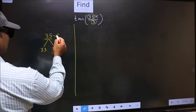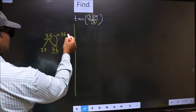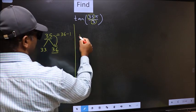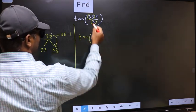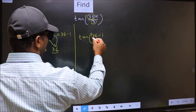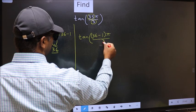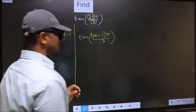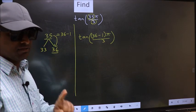So 35 now should be written as 36 minus 1. So this will become tan. In place of 35, now we should write 36 minus 1 π by 3. This is your step 1.